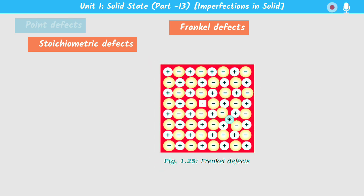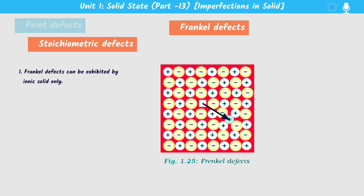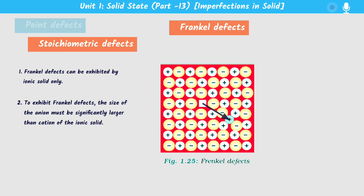Instead, ionic solids exhibit Frenkel defects and Schottky defects. Frenkel defect is actually like an interstitial defect, but the difference is that we do not introduce constituent particles from outside. Instead, some constituent particles already inside the solid displace their location. The first point to remember: Frenkel defect is only shown by ionic solids.